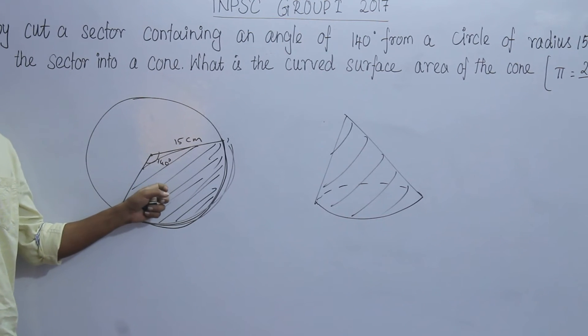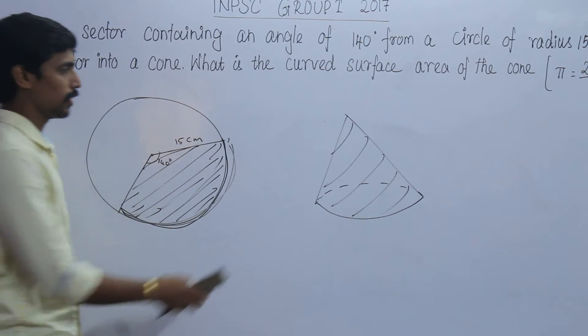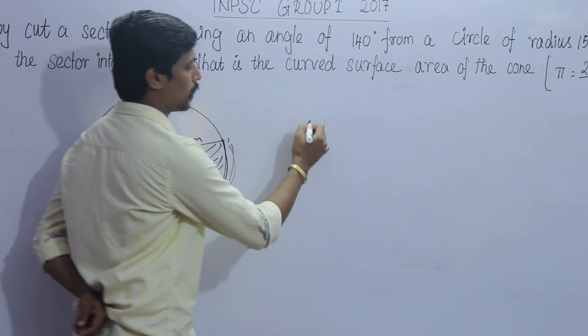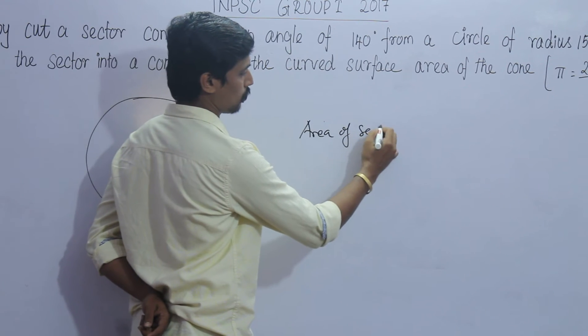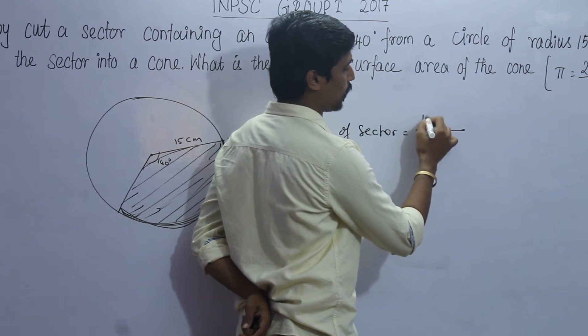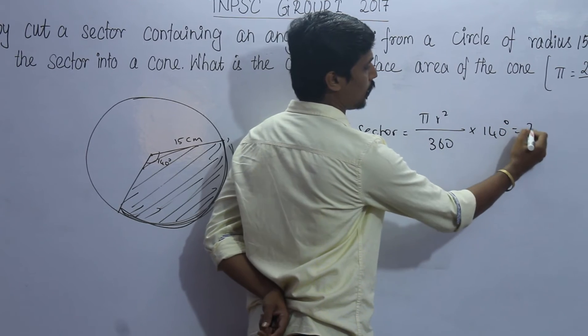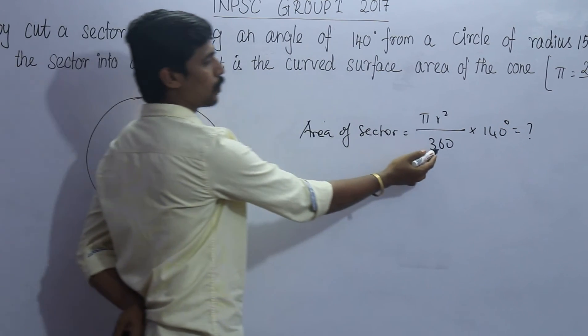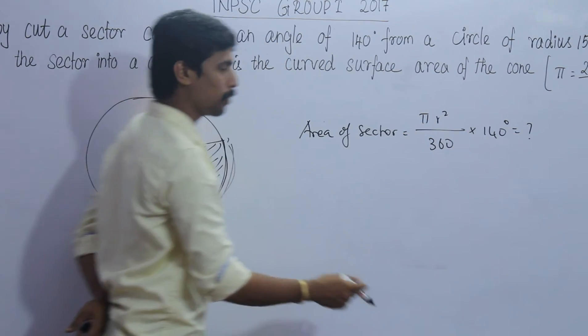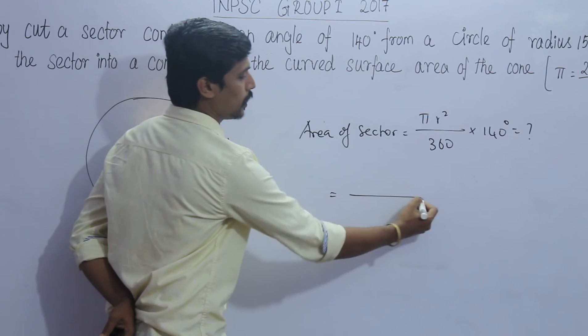We need to find the area of the sector. How can we find the area of sector? This is the formula: area of sector equals pi r squared times theta over 360 degrees.